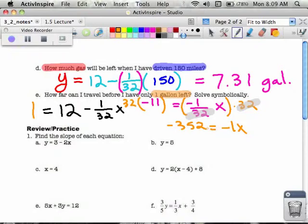And of course that means that if I divide both sides by negative 1, then that means that X equals 352. What was I looking for? How many miles? Miles. Thank you very much. How many miles? This is about miles. When I have one gallon of gas left in my tank, which is probably when I should for sure fill up my tank, just to be safe, I've driven 352 miles.